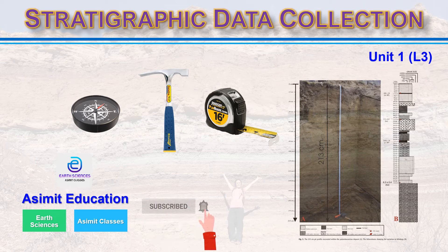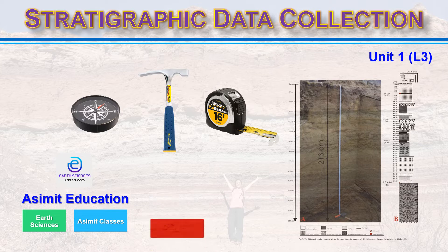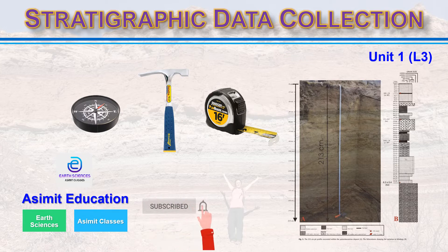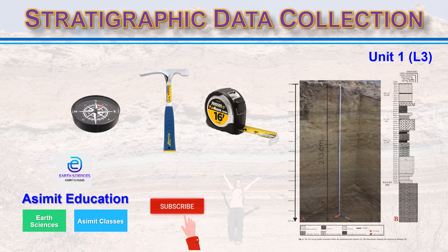For understanding the history and nature of rock formations, it is necessary to collect stratigraphic data in a systematic manner to know how rocks were deposited and what changes took place after their deposition. It would also be possible to know about the nature of the basin in which deposition took place. In this video presentation, we will learn about stratigraphic data collection, and in the coming presentations we will learn about stratigraphic classification and correlation.